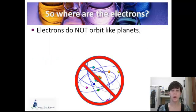So where are all of these electrons? You often see this kind of picture of the atom where all of the electrons are swirling around the nucleus in these planetary orbits. This is not really the case, and we're going to talk about what the case really is today.